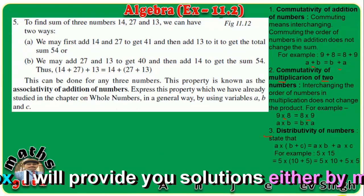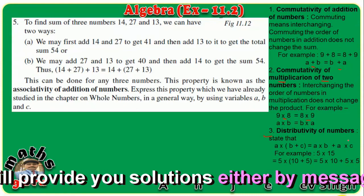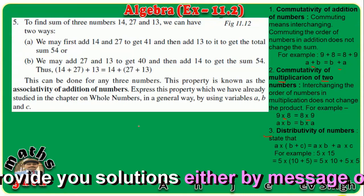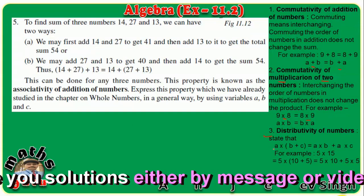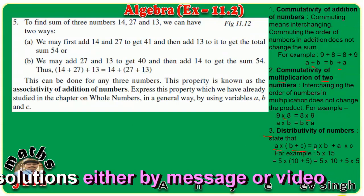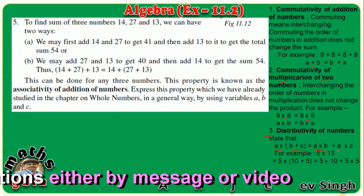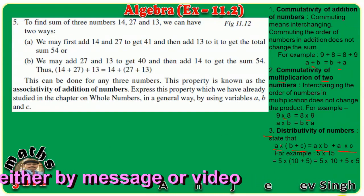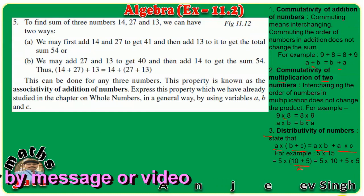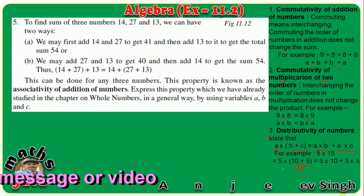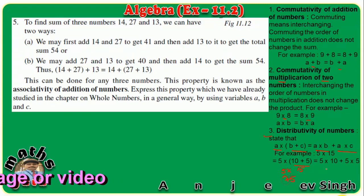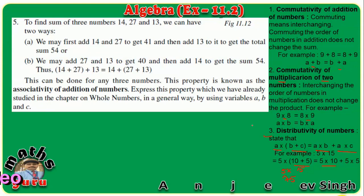The third rule is the distributive property of numbers. It means that if you have 3 numbers: a multiplied by (b plus c), then we can write it as a multiplied by b, plus a multiplied by c. For example, 5 multiplied by (10 plus 5): 5 times 10 is 50, and 5 times 5 is 25, giving a total of 75.